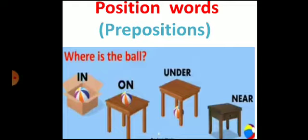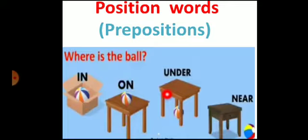Children, can you see these pictures? There is a common ball in all the four pictures. Now the question is: where is the ball? In the first picture, the ball is in the box. In the next picture, the ball is on the table. In the third picture, the ball is under the table. And in the fourth picture, the ball is near the table. By seeing the position where the ball lies, we are able to tell the position of the thing. These words — in, on, under, near — are prepositions, or you can say position words.